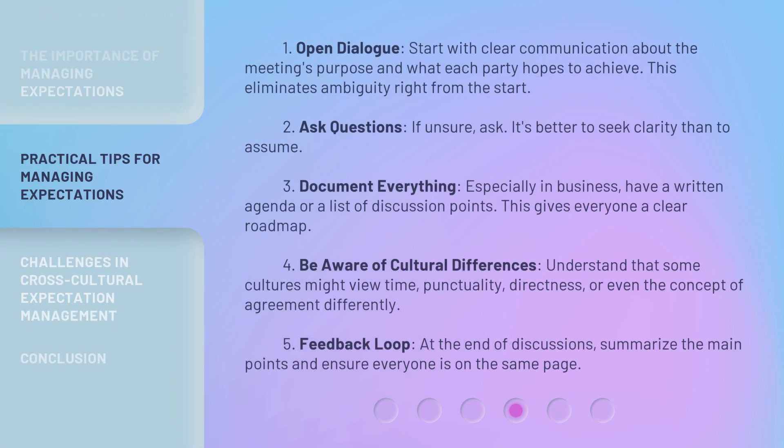1. Open dialogue: Start with clear communication about the meeting's purpose and what each party hopes to achieve. This eliminates ambiguity right from the start. 2. Ask questions: If unsure, ask — it's better to seek clarity than to assume. 3. Document everything, especially in business: have a written agenda or a list of discussion points. This gives everyone a clear roadmap.